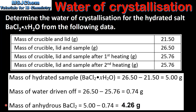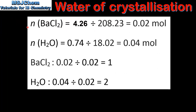Finally we can determine the mass of the anhydrous BaCl₂. To do this we subtract the mass of water driven off from the mass of the hydrated sample, which gives us 4.76 grams. Next we convert from mass in grams to amount in moles. We divide the mass of the anhydrous sample by its molar mass, which gives us 0.02 moles. For the water, we divide the mass of water driven off by the molar mass of water, which gives us 0.04 moles.